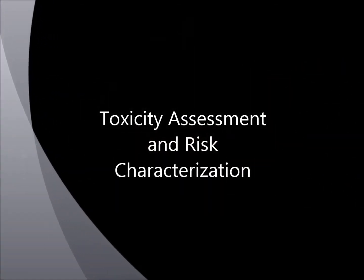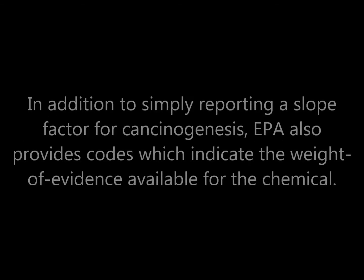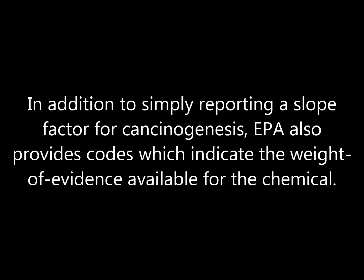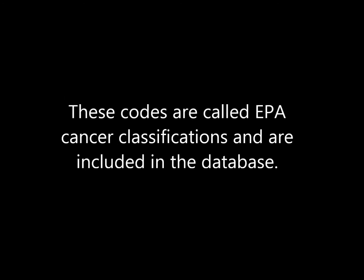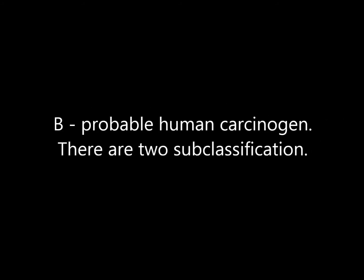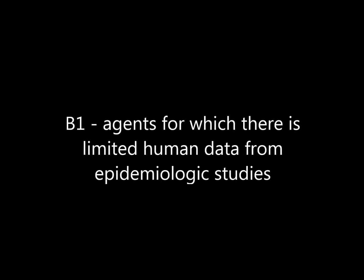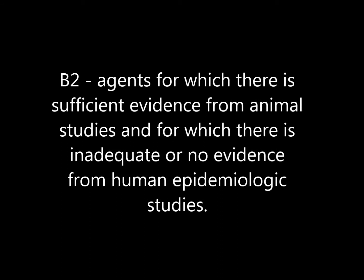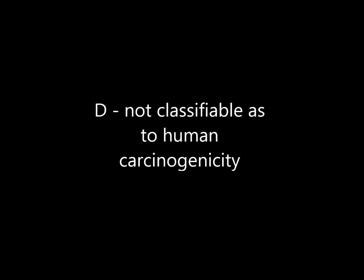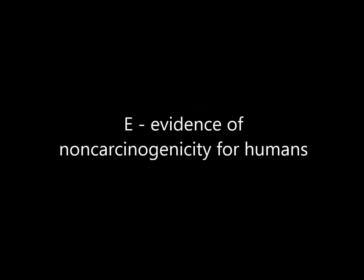Toxicity Assessment and Risk Characterization. This stage defines the toxicity and risk present for the chemical of concern. The EPA provides codes indicating the weight of evidence available for a chemical — called EPA cancer classifications. These are: A for human carcinogen; B for probable human carcinogen, with subclassifications B1 for agents with limited human epidemiologic data and B2 for agents with sufficient animal study evidence but inadequate human data; C for possible human carcinogen; D for not classifiable as to human carcinogenicity; and E for evidence of non-carcinogenicity for humans.